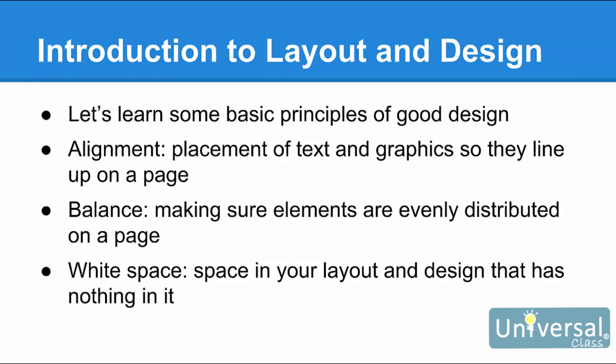You can use alignment to group items, create order, or organise the page elements. Alignment can be horizontal or vertical, or you can line up text and objects along their top, bottom, left, or right edges. Balance is achieved by making sure elements are evenly distributed on a page. You don't want to have one section with dozens of pictures and the next with none, or everything lined up on one side of the page and nothing on the other. White space is space in your layout and design that has nothing in it — it's just blank space. It's important to have enough white space so the page is easy to look at and to read. You don't want to cram in pictures and text; it looks like a traffic jam for the eyes.